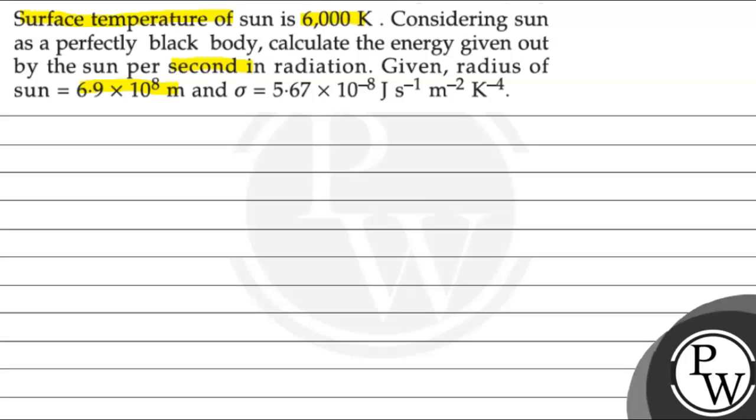Either for the sun, we have the radius and also the temperature. The temperature is 6000 Kelvin and the radius is 6.9 into 10 to the power 8 meter.